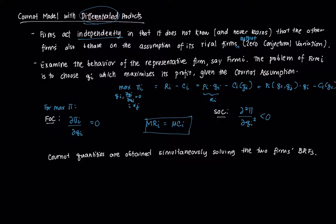How do we obtain the Cournot quantities? We obtain them by simultaneously solving the two firms' best response functions. The Cournot equilibrium prices are obtained by substituting those quantities to the firm's demand functions. But in this case, when we have differentiated products, we have two demand functions, so that might not be the same price.